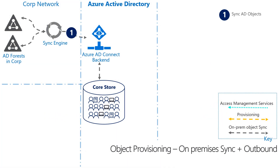Let's walk through the first flow. Taking the objects from on-prem to the cloud directory is step one, which we call synchronization. The sync engine connects to the on-prem AD and Azure AD — represented by the triangle in the upper left-hand corner and the cylinder in the middle of the diagram — and synchronizes data between the two directories.